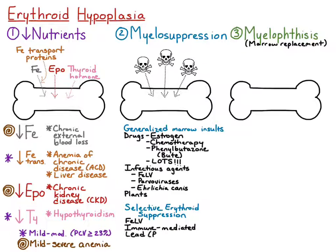Lead toxicity can only affect red blood cells. This causes a non-regenerative anemia, and you'll often see an inappropriate metarubrocytosis — increased numbers of nucleated red cells without a regenerative response.